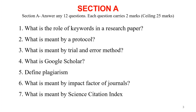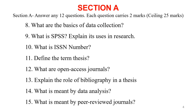This is Section A. You can see the first question is: what is the role of keywords in a research paper? I'll give the link of each video that gives you the answer to each question in the description box. Other questions include: what is meant by protocol, what is meant by trial and error method, what is Google Scholar score, define plagiarism, what is meant by the impact factor of a journal, what is meant by the Science Citation Index, and so on. This covers the first seven questions and the remaining questions of Section A.